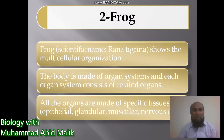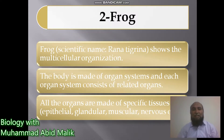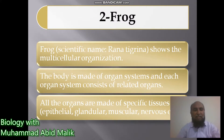The frog has the scientific name Rana tigrina and shows multicellular organization. The body is made of organ systems, and each organ system consists of related organs. All organs are made of specific tissues, including epithelial, glandular, muscular, and nervous tissues.